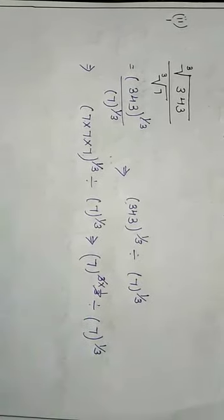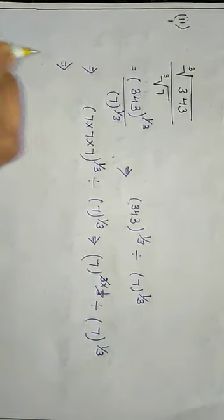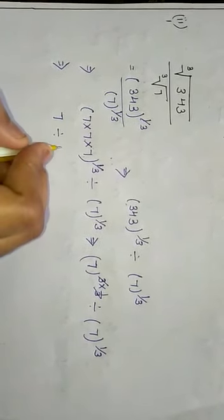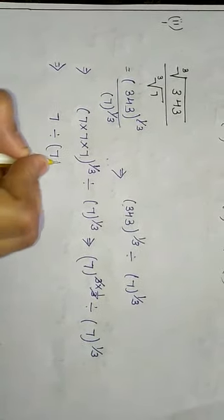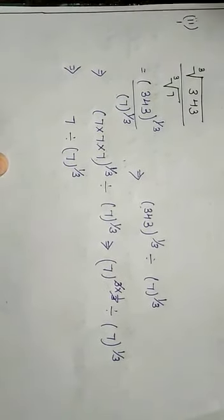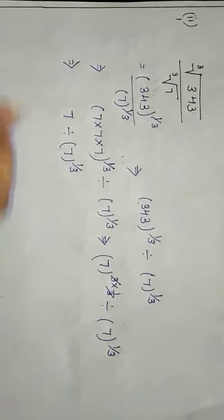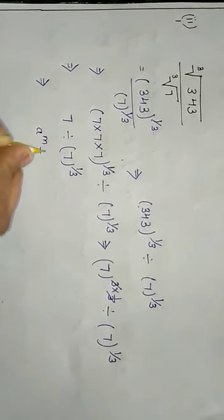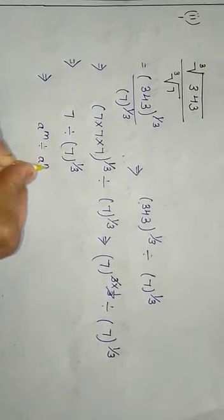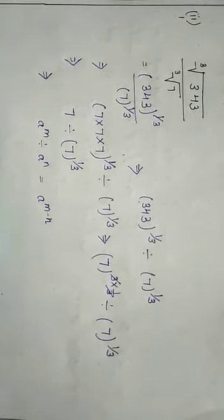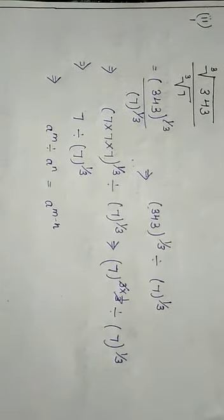These 3s get eliminated and we have only 7 divided by 7 to the power 1/3. Now we know that the formula: a to the power m divided by a to the power n equals a to the power (m - n).